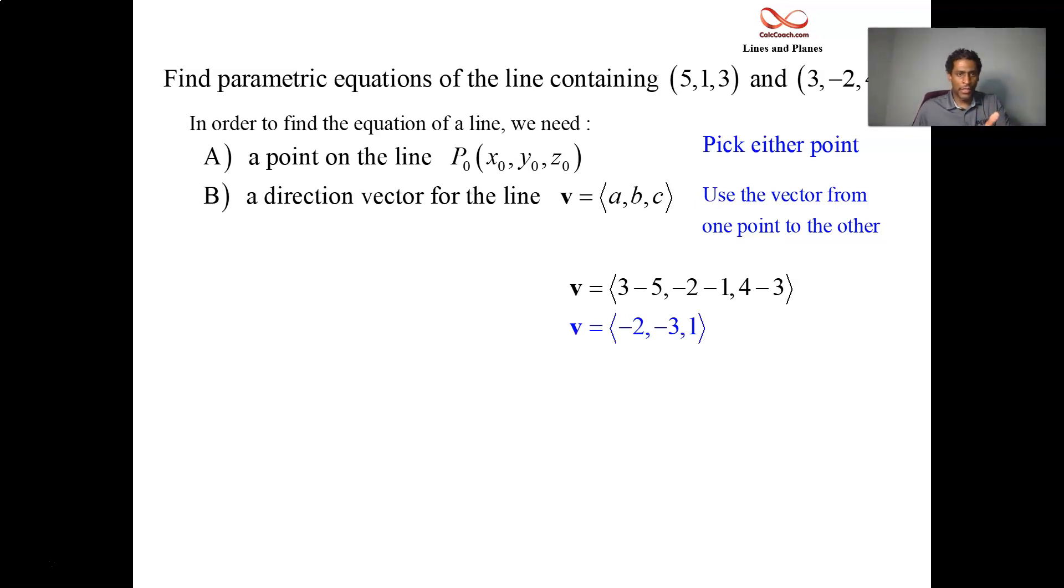We have everything we need. Now, the way this thing is written, we have x equals, y equals, z equals. Now, x is x0 plus at and y is y0 plus bt and z is z0 plus ct. So we have the point x0, y0, z0, and we have the direction vector ABC. We have what we need. We just plug them in. Either point—let's take the point (5, 1, 3), and let's take the direction vector (-2, -3, 1). Those are the coefficients on t. That's it. You did it. You just found the parametric equations of the line that contains those two points.